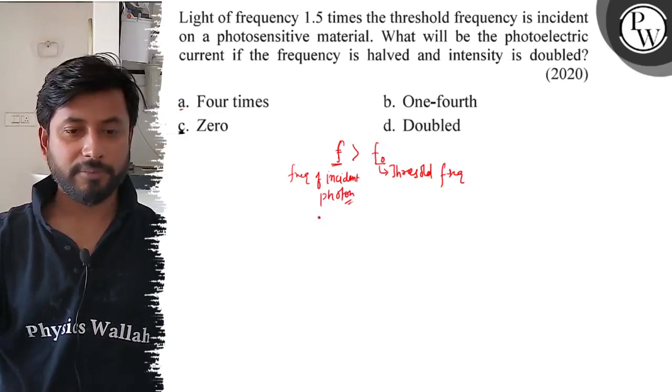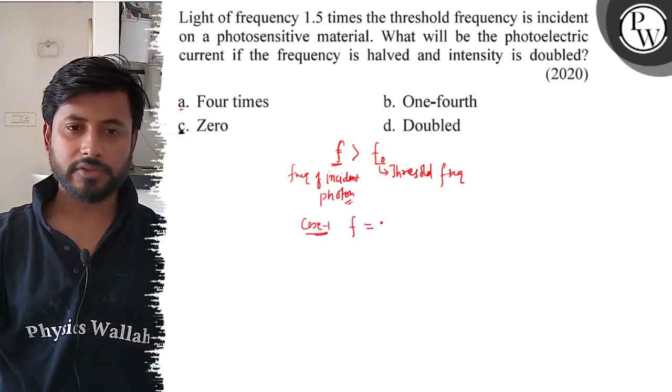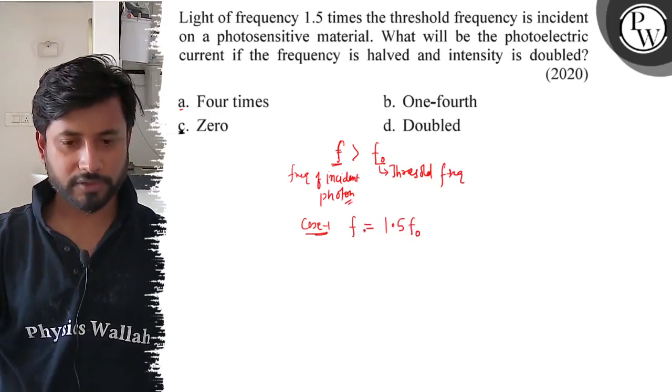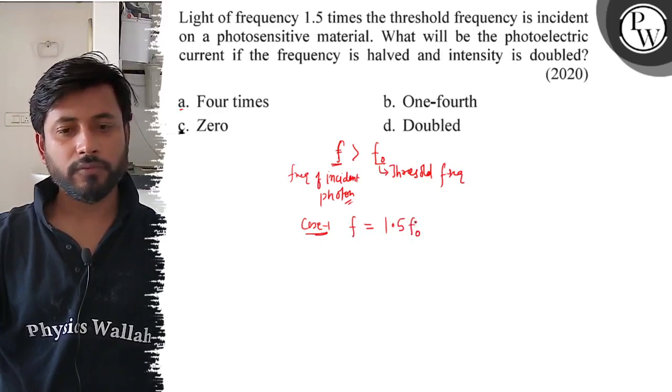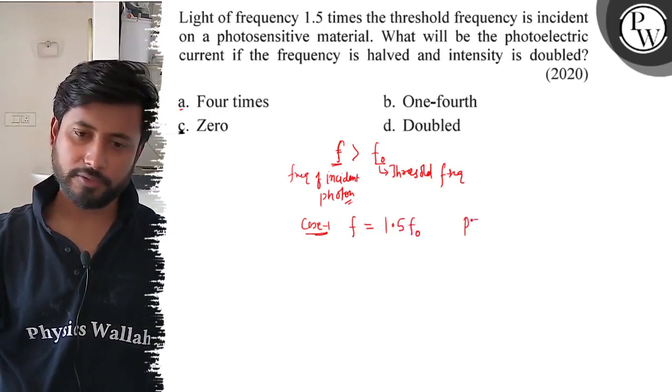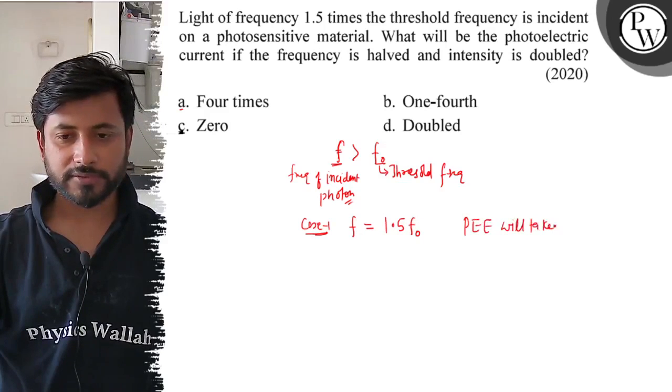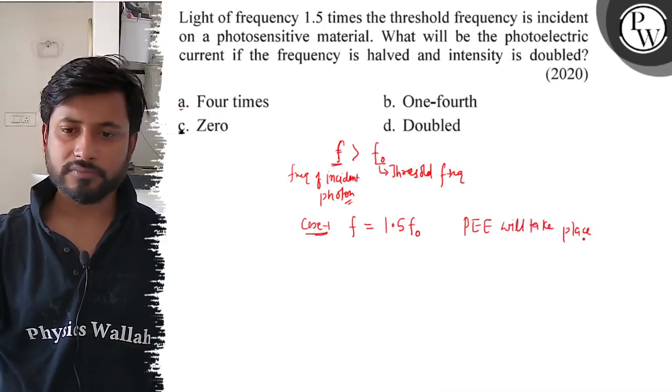Here is the first case. Initially, case 1: F equals 1.5 F0. The incident photon frequency is 1.5 times the threshold, so photoelectric emission will take place, and photocurrent also.